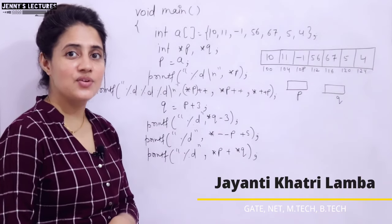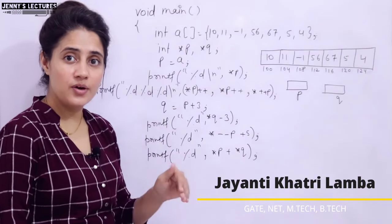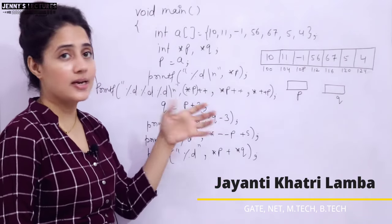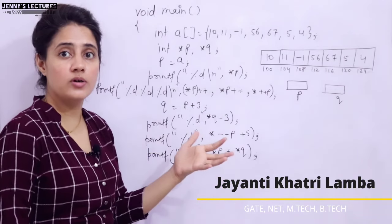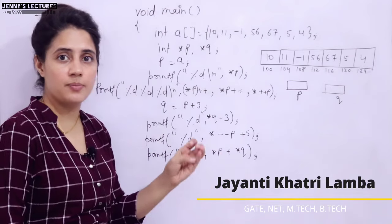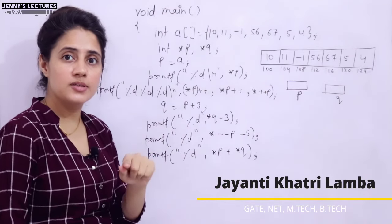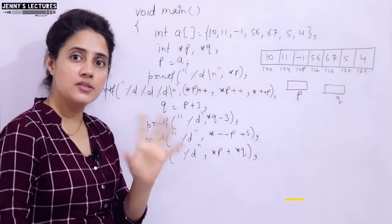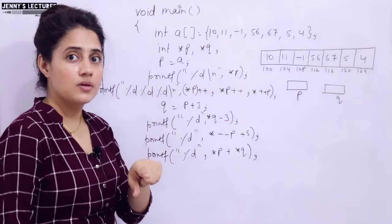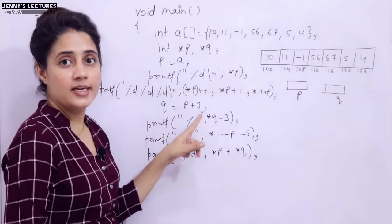In this series on learning programming in C, we are discussing pointers. So far we have covered basics of pointers as well as pointer arithmetic — addition, subtraction, increment and decrement. We are left with one operation, comparison of two pointers, which we will also discuss. But in this video I am going to discuss a technical question.